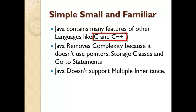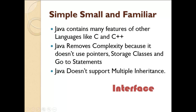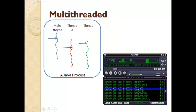Java is simple, small and familiar. Java contains many features of other languages like C and C++. Java removes complexity because it does not use pointers or goto statements. Java also does not support multiple inheritance, because there were some problems with multiple inheritance in C++, so Java removed it and provides its alternative in the form of interfaces.